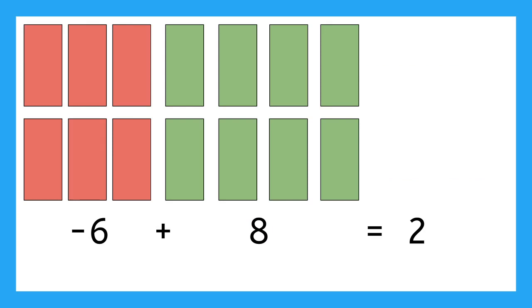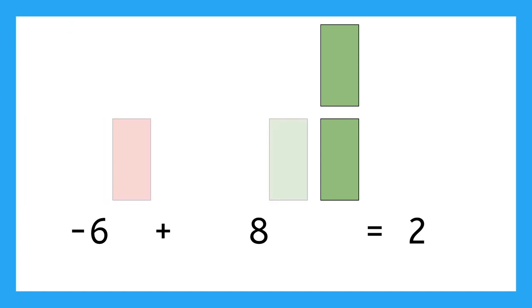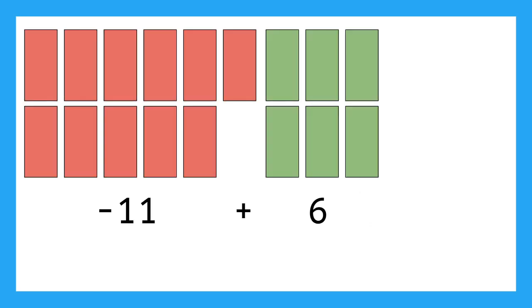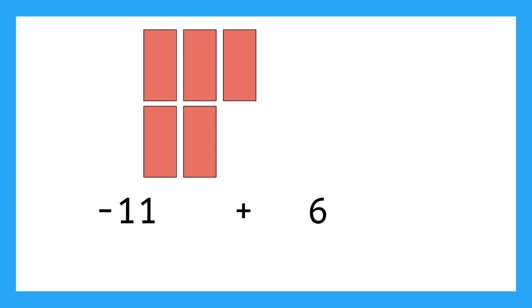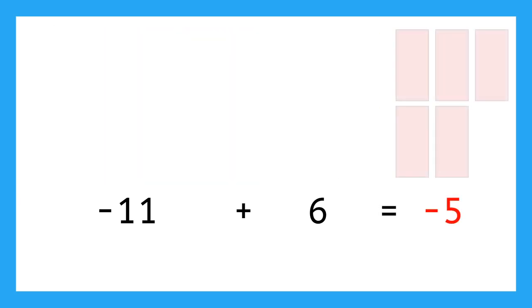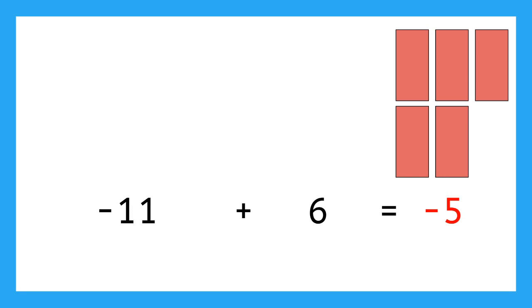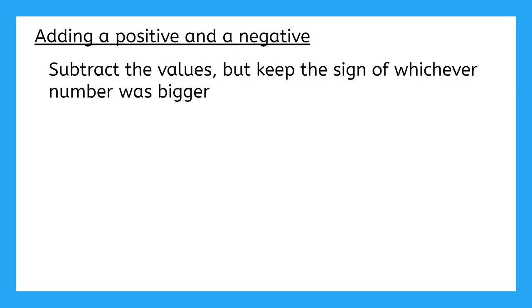Now let's look at some cases that combine having and owing money. If you owe six dollars but have eight in your wallet, after you pay the six you'll be left with two dollars. But if you owe eleven dollars and only have six, you give up everything in your wallet and still owe another five dollars.